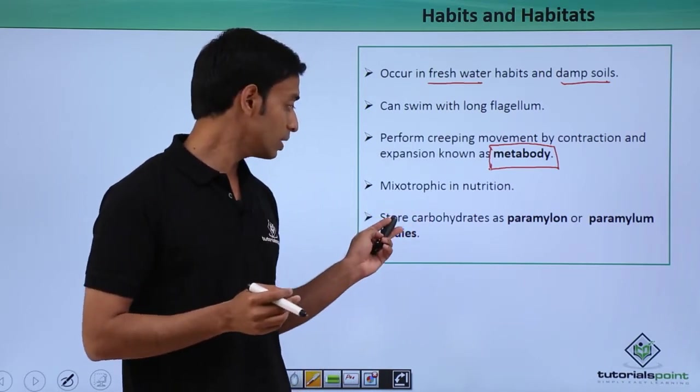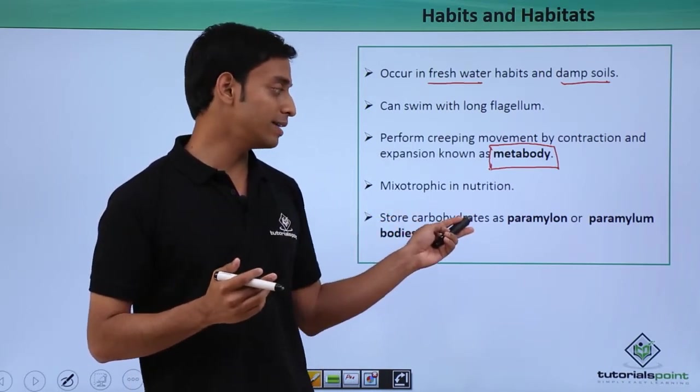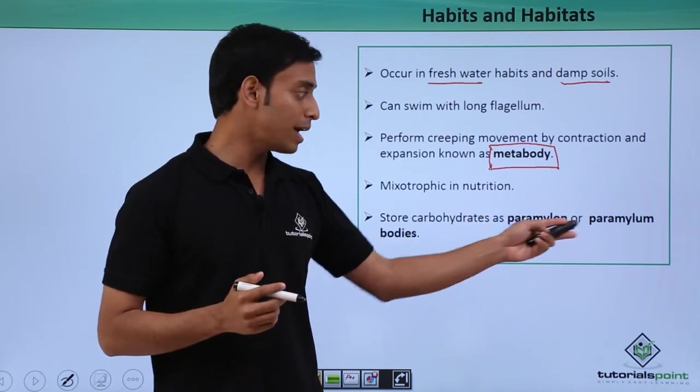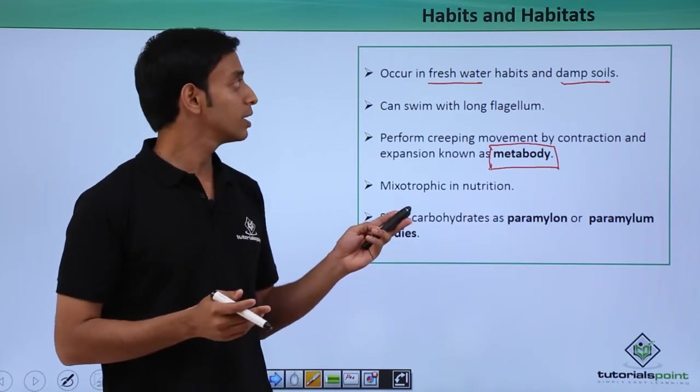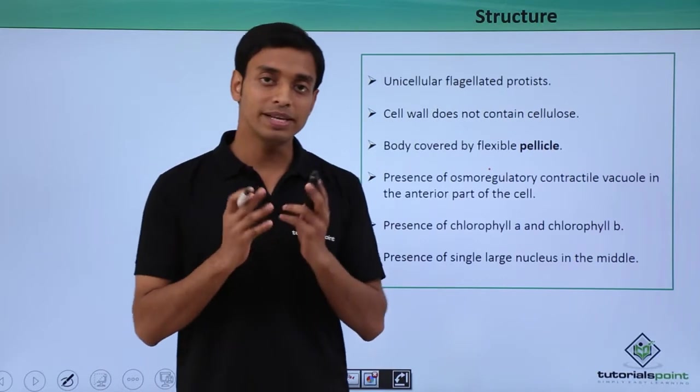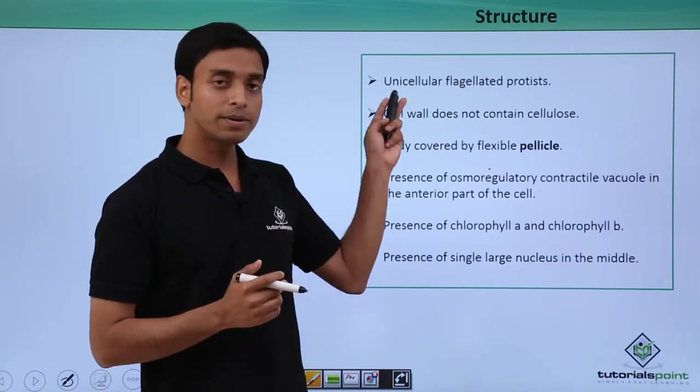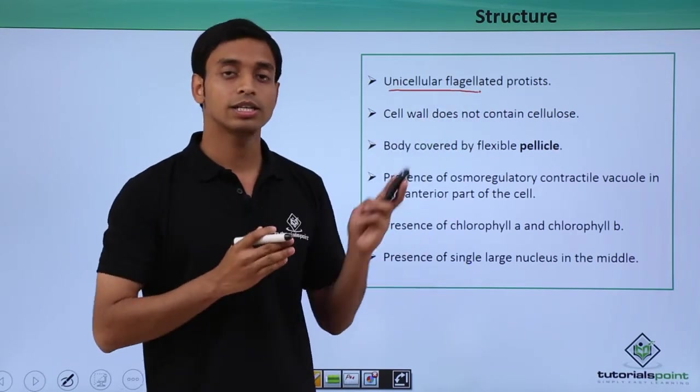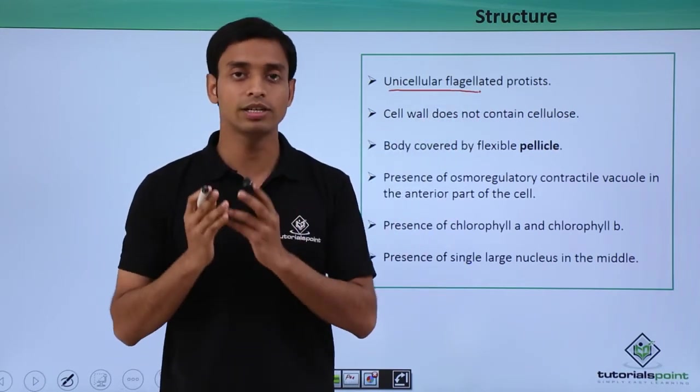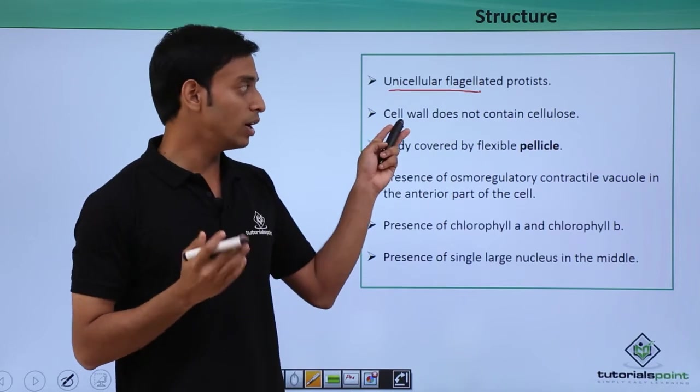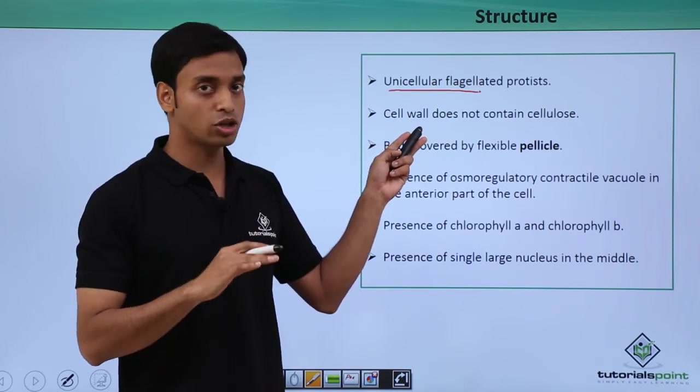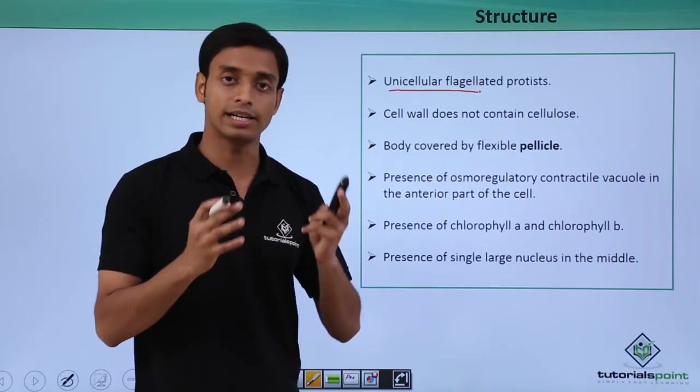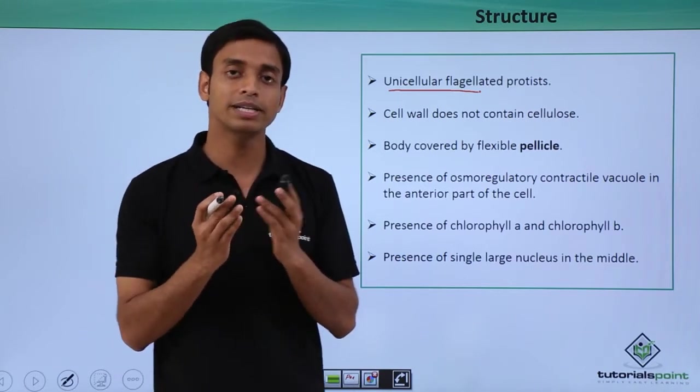They usually store carbohydrates as paramylon or paramylum bodies. Now let's take a look at the basic structure of these euglenoids. They are mostly unicellular flagellated protists. The cell wall does not have cellulosic contents.